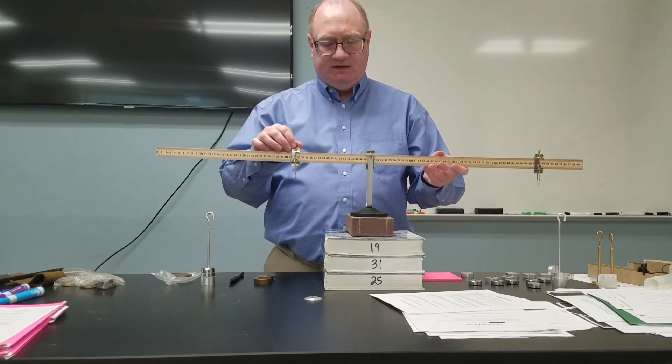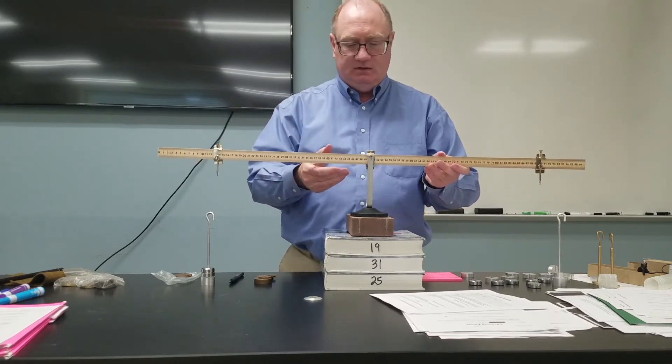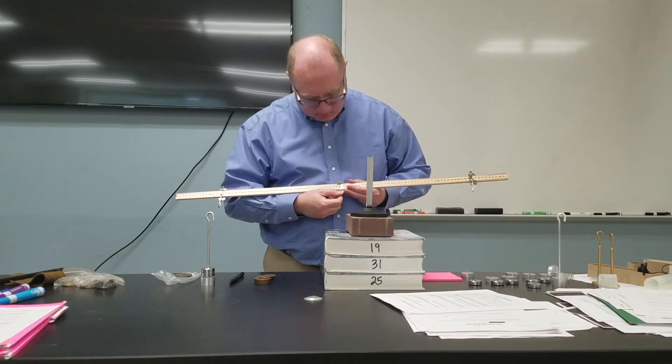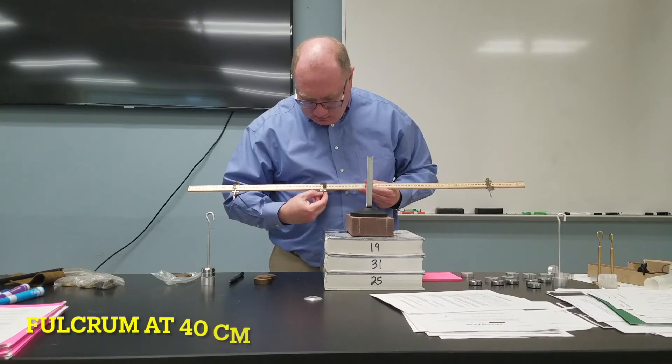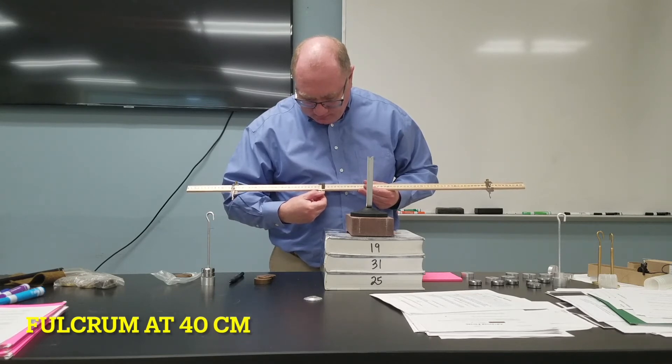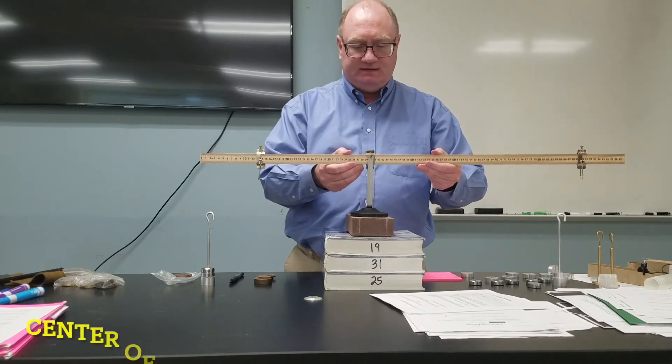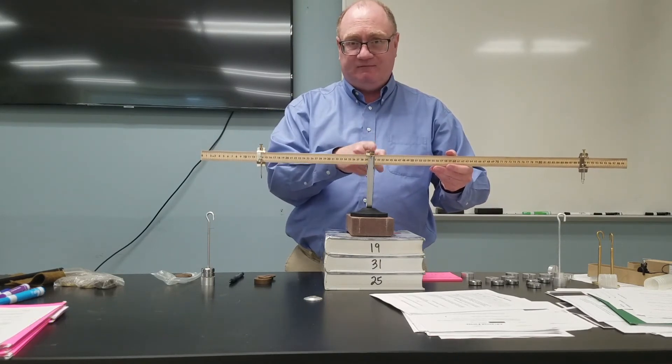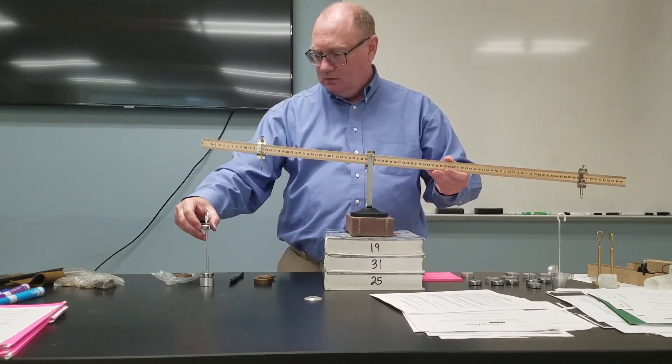Now let's see what happens if the fulcrum is not at the center mass. So I'm going to take this and I'm actually going to move it to about the 40 centimeter mark. Now the center mass of this board is at 50.2 centimeters, and I've just put this at 40 centimeter mark.